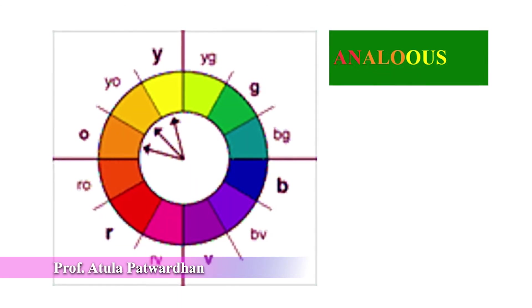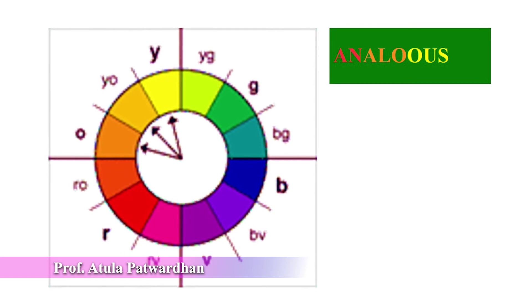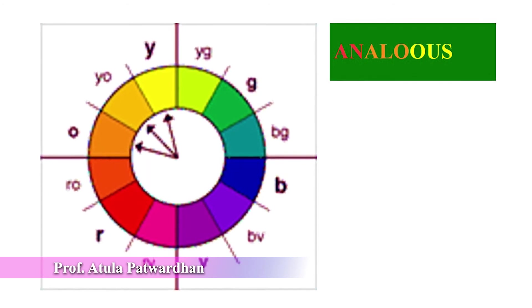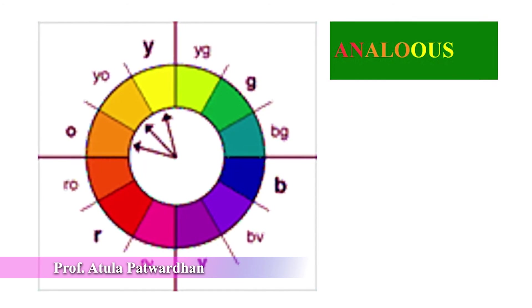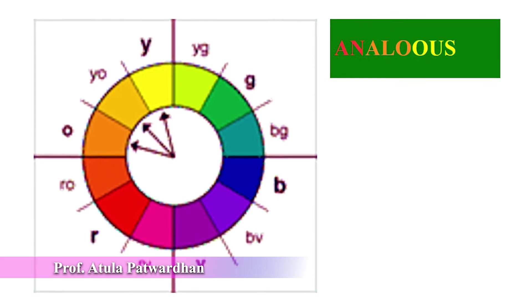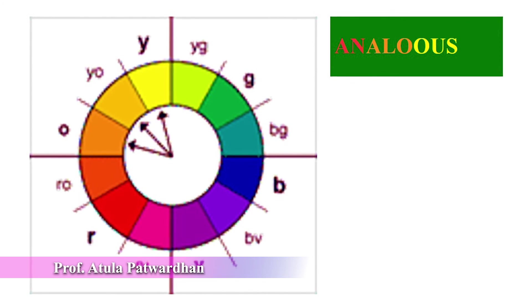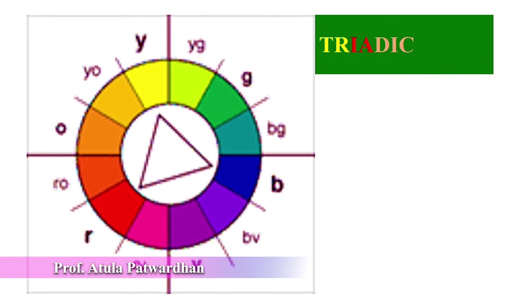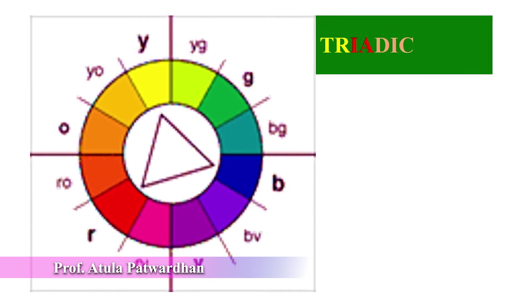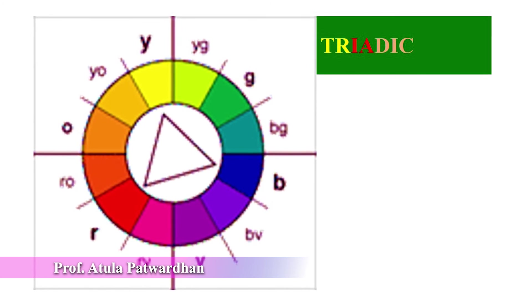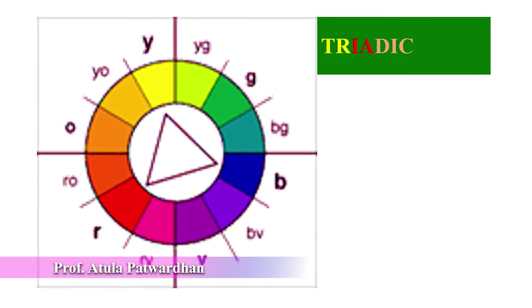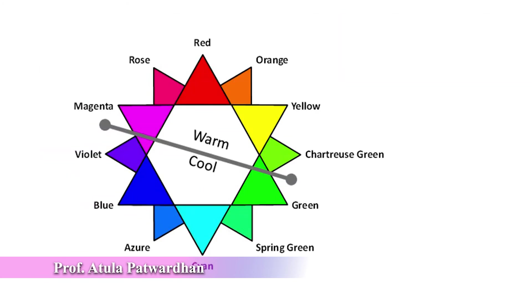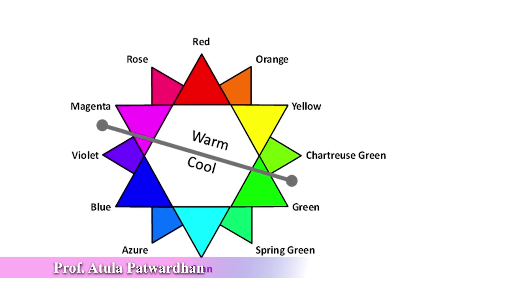Analogous color scheme: an analogous relationship is a harmony of colors whose hues are adjacent to one another on the color wheel. Analogous colors tend to be families of colors such as blue, blue-violet, blue-green, and yellows — yellow, yellow-orange, and yellow-green. Triadic color scheme: a triadic color scheme is a harmony of three colors equidistant from one another on the color wheel. Primary colors and secondary colors are examples of color triads.